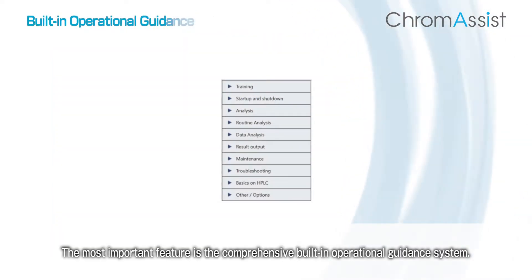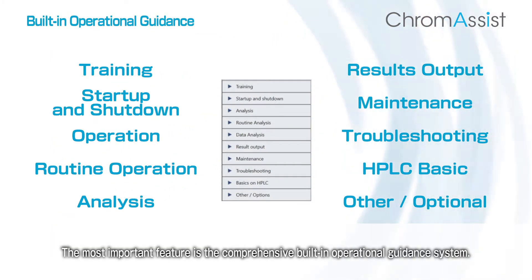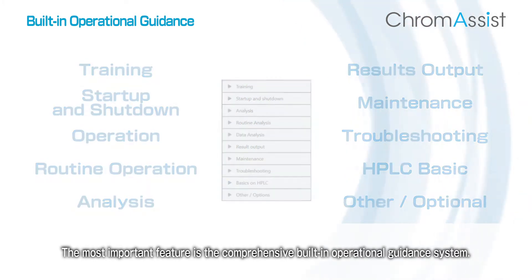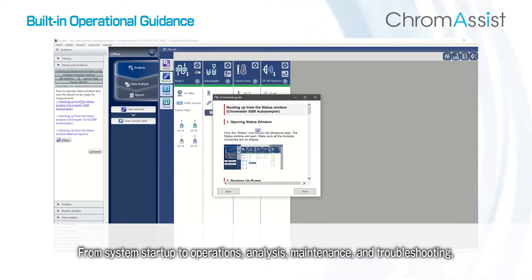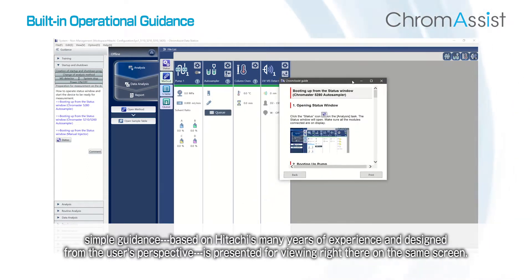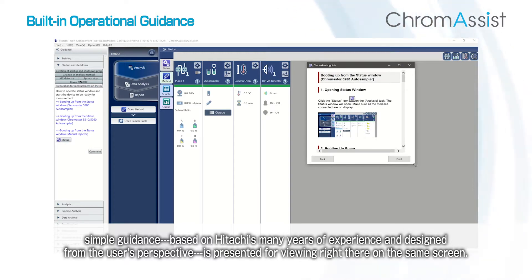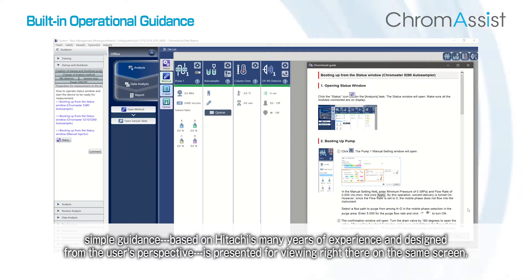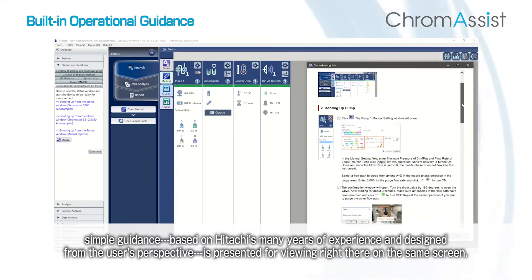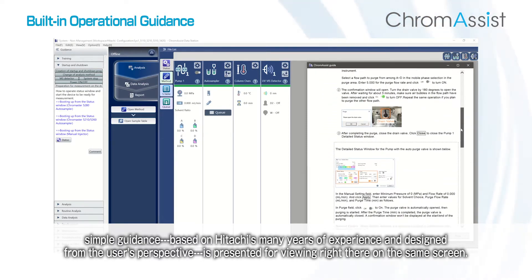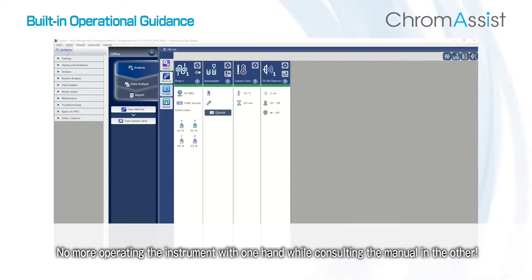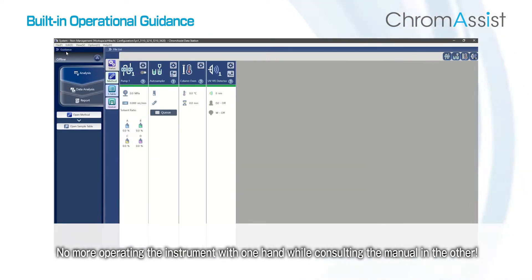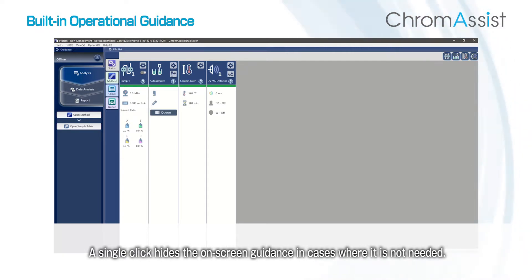The most important feature is the comprehensive built-in operational guidance system. From system startup to operations, analysis, maintenance, and troubleshooting, simple guidance based on Hitachi's many years of experience and design from the user's perspective is presented right there on the same screen. No more operating the instrument with one hand while consulting the manual in the other. A single click hides the on-screen guidance in cases where it is not needed.